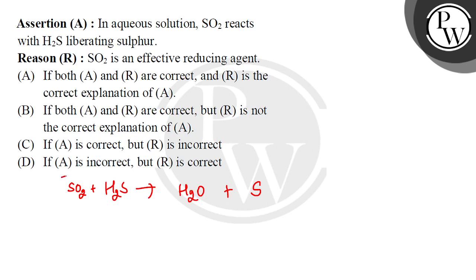So you can see the oxidation state of sulfur. This is plus four. Here it is zero, meaning that it has decreased. So what is this? It is reduction. Decrease in oxidation state is reduction. So it is an oxidizing agent. What is oxidizing agent? It means that it is reducing itself.